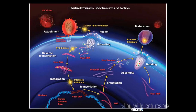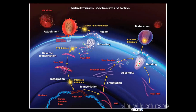Once transcription continues, you'll have formation of proteins via translation — long strands of protein. For them to be active proteins, something has to cleave them into pieces, and the enzyme that does this is the protease. Without the protease, you can't have those active protein strands, and you won't have budding or maturation. So that's where your protease inhibitors work. In a nutshell: entry inhibitors at attachment, one fusion inhibitor, NRTIs and NNRTIs at reverse transcription, integrase inhibitors at integration, and protease inhibitors at the later step.